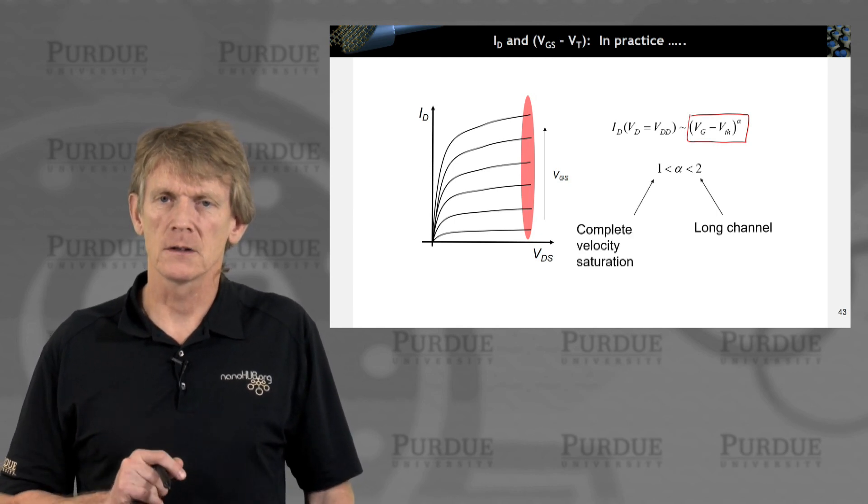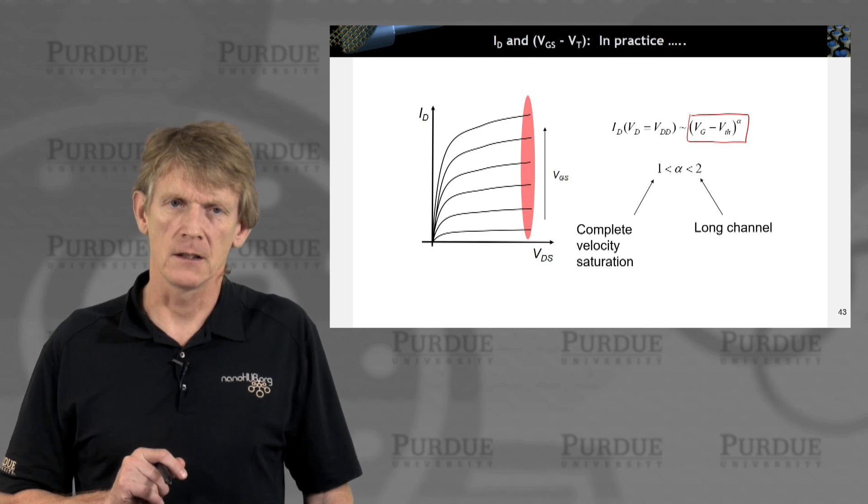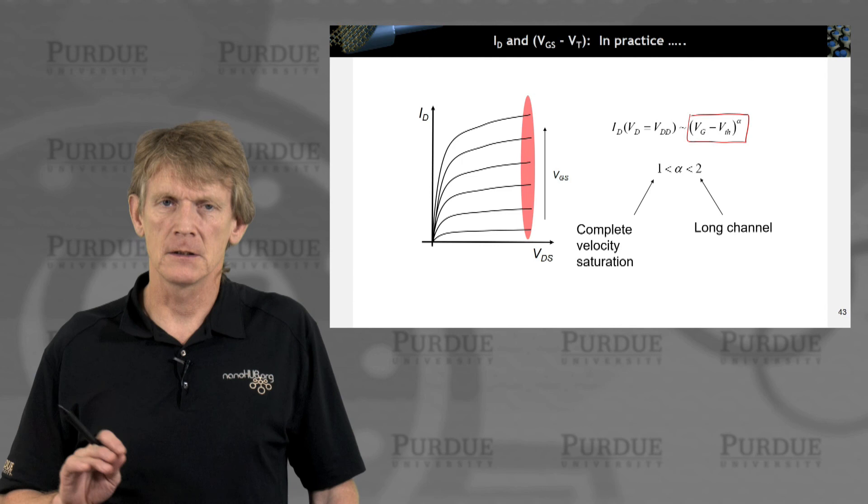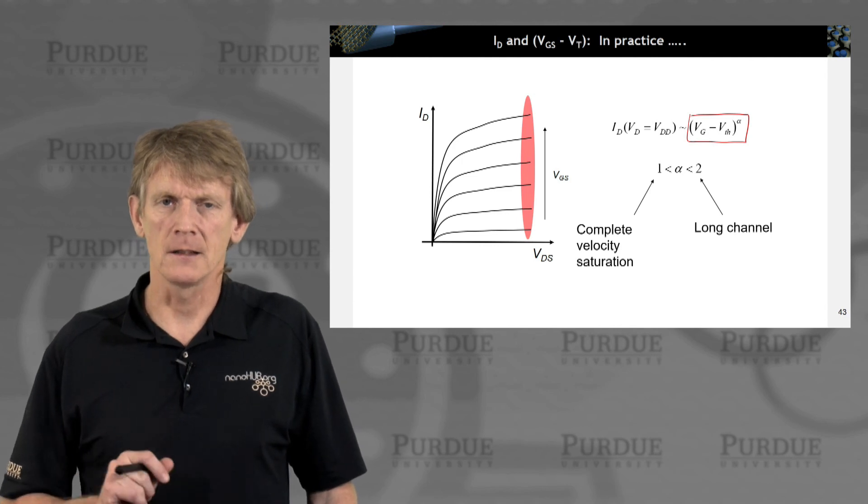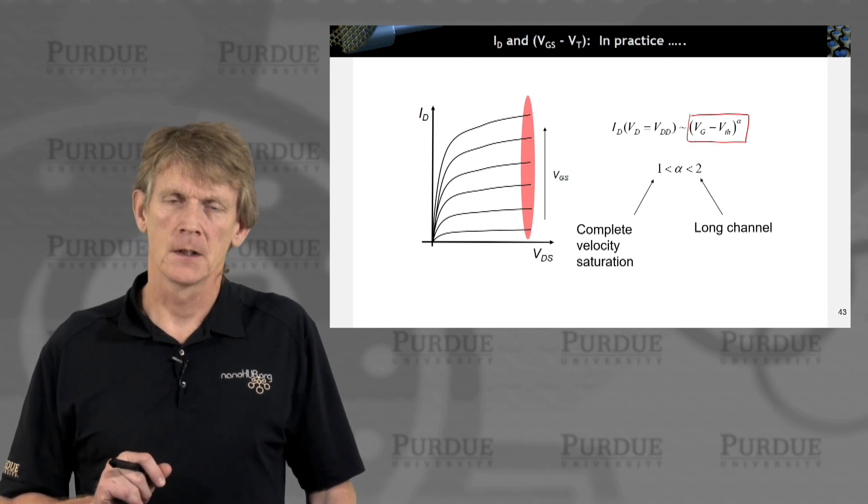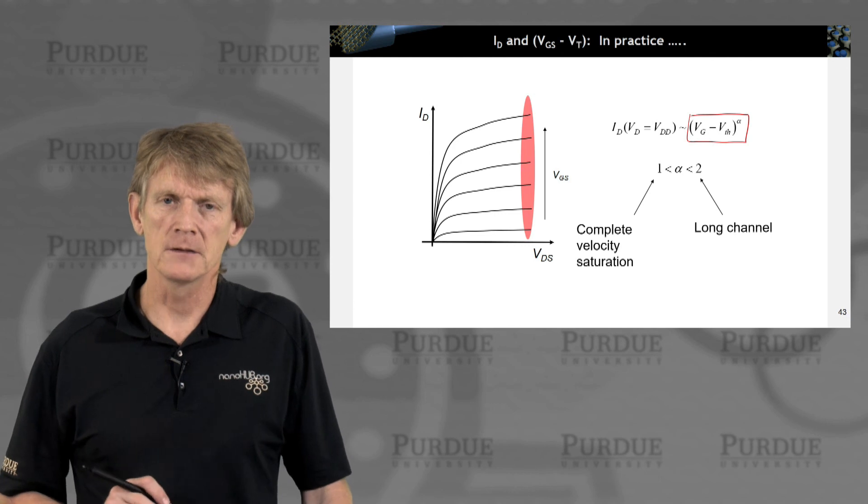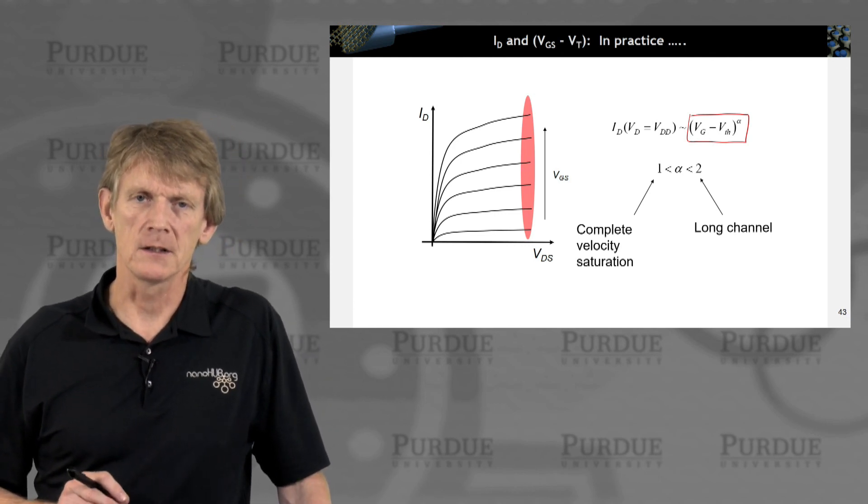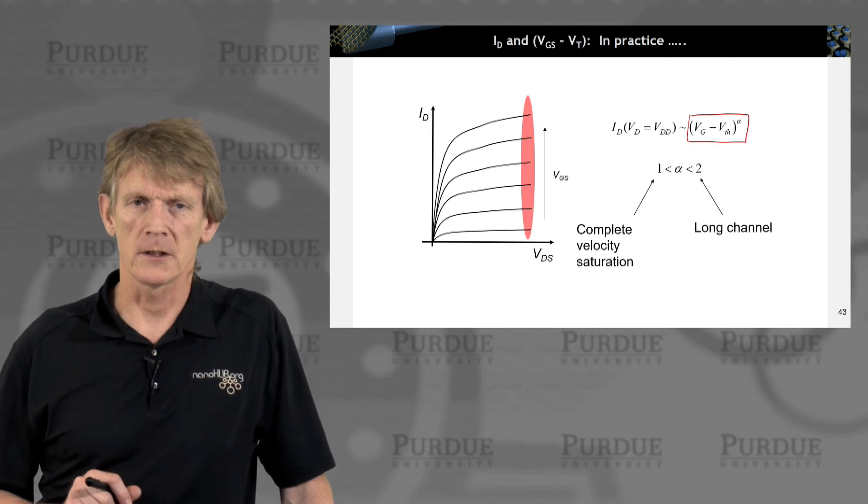you're in the complete velocity saturation limit. So, depending on the geometry and the dependence along the channel, the length of the channel, and the ability to drive carriers at a certain velocity, you end up with a current expression.